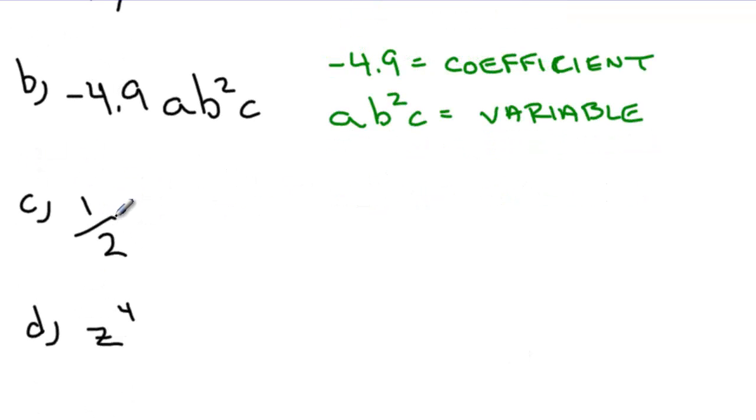I have the term 1/2. Here, the number part of this, 1/2, represents the coefficient. And in this particular case, there is no variable. So terms can have a coefficient, but they don't always have to have a variable.